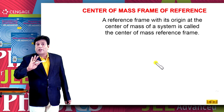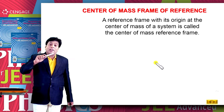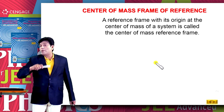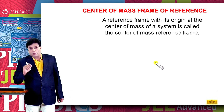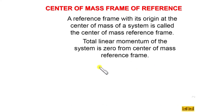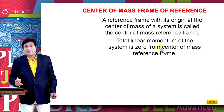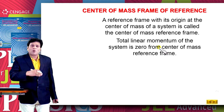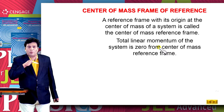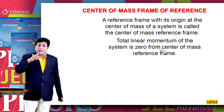That means the linear momentum of the center of mass is zero, because velocity is zero and momentum equals mass times velocity. Therefore, the linear momentum of the system as observed from the center of mass frame of reference is zero. That is why we call this frame of reference a zero momentum reference frame. This means we need not care about the linear momentum of the system when analyzing from this frame, so one equation gets eliminated.